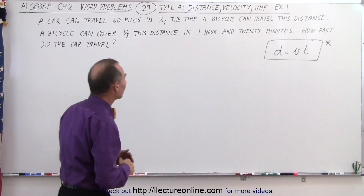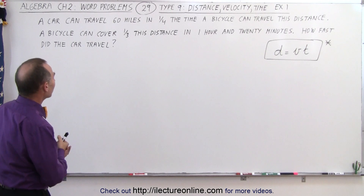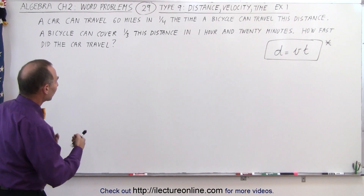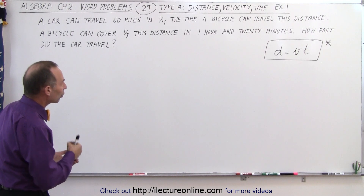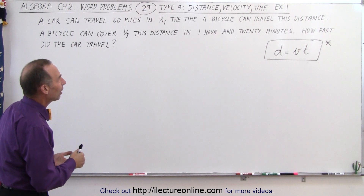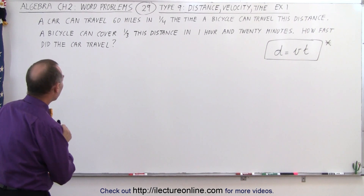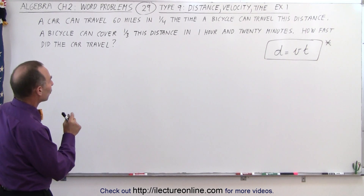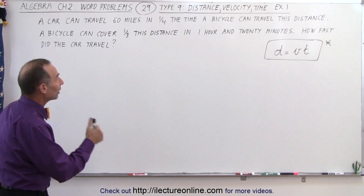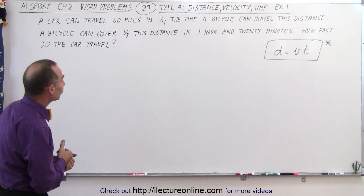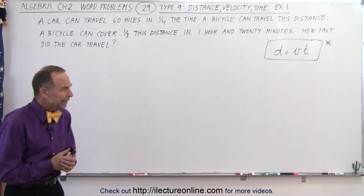Let's read the problem. A car can travel a distance of 60 miles in one quarter the time a bicycle can travel the same distance. A bicycle can cover one third of this distance in one hour and 20 minutes. How fast did the car travel?